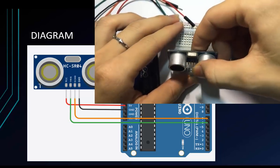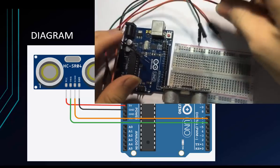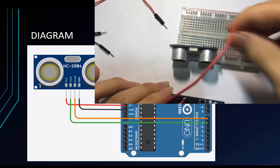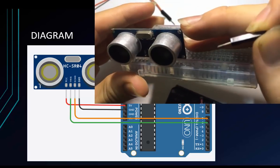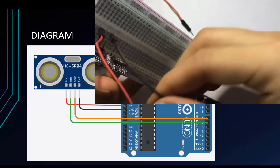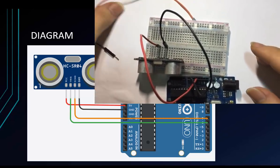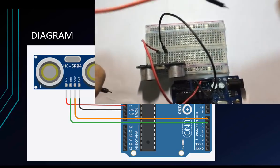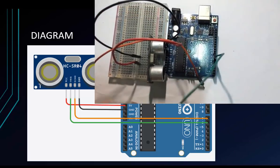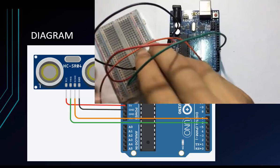Now let me check my circuit. I have 4 wires matching the diagram: red, black, orange, and green. My SONAR module also has 4 pins — VCC, GND, Trigger, and Echo. I will connect them one by one: 5 volts to VCC, GND to GND, and then the Trigger pin to pin 6, and the last one to pin 7.